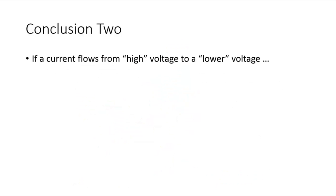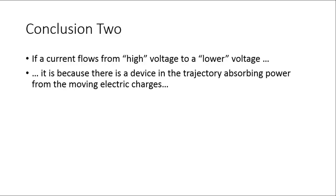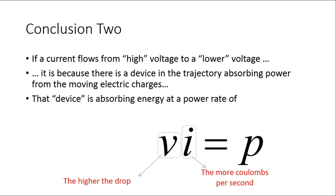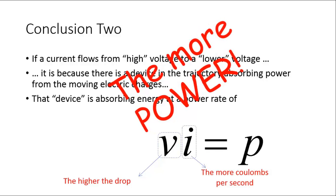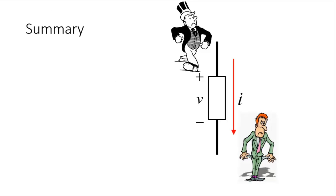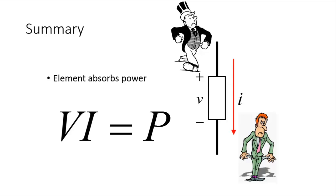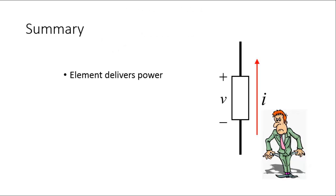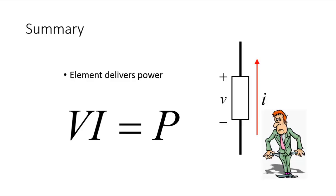Conclusion 2: If the current is flowing downhill from high to a lower voltage, there is a device in the trajectory that is absorbing power from the moving charges. That device is absorbing energy at a power rate of VIP — the higher the drop, the more coulombs per second, the more power absorbed. Summary: if coulombs arrive rich in energy and leave poor in energy, the element in the path — that box — is absorbing power. How much power? V times I. But if the coulombs arrive poor and leave the element rich, the element is delivering power — delivering V times I watts.